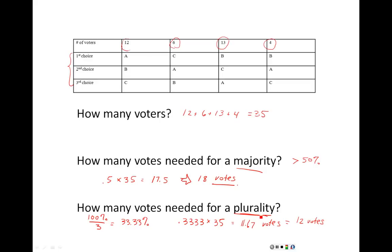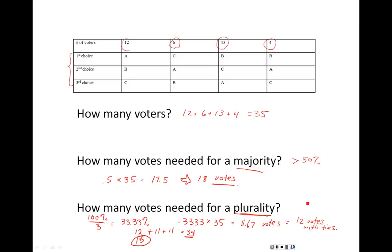Be careful: 12 votes is the minimum if you allow ties. If the winner has 12 votes and the other two candidates each have 11 votes, that only adds up to 34 — not the 35 votes we need. So we'd actually need 13 votes to guarantee winning this election without resorting to a tie.